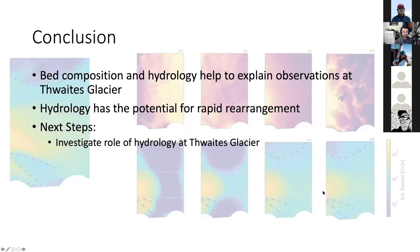In conclusion, variations in bed composition and basal water pressure likely work together to contribute to basal strength at Thwaites Glacier. The role of hydrology is particularly noteworthy given the potential for rapid rearrangement of hydraulically controlled systems. Next steps include looking more into how hydrology plays a role at Thwaites in the future, as hydraulic systems can rearrange themselves somewhat rapidly on the timescale of glaciers. Thank you.